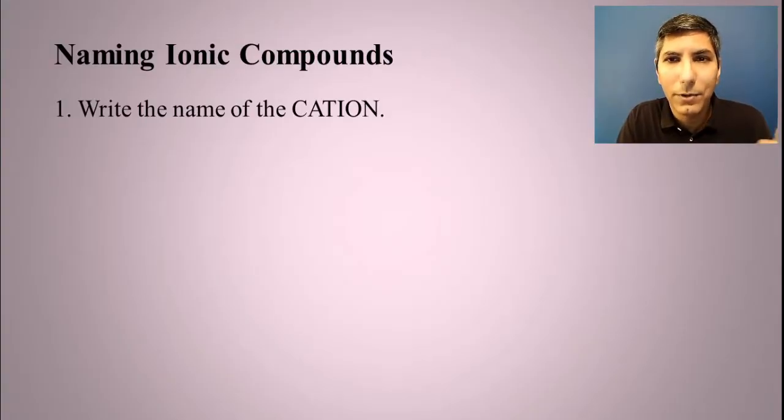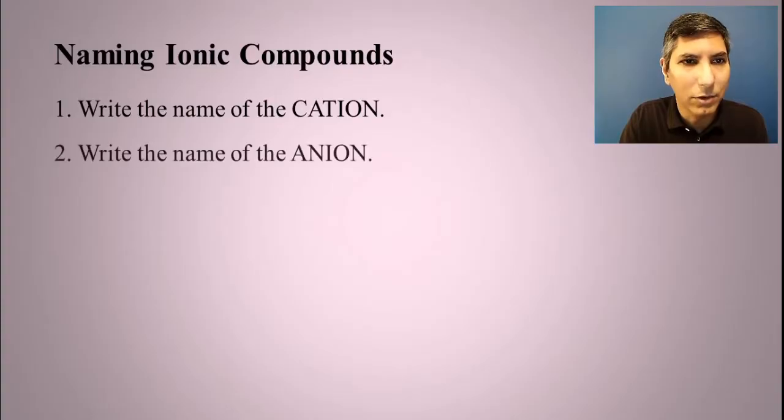All you have to do, first of all, is isolate the cation. That's the first part of the formula. And you write its name. So you have to know those names of the ions from the ion chart. And then write the name of the anion. And usually that's it.